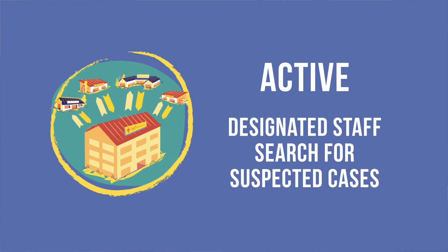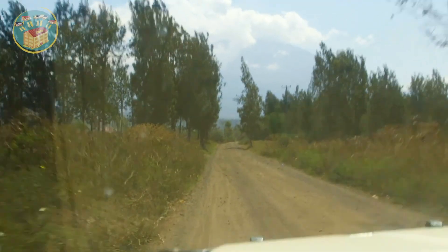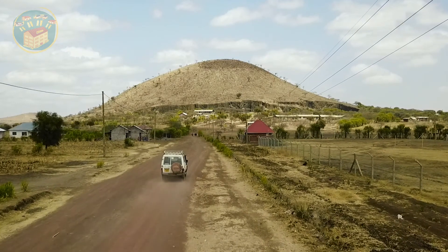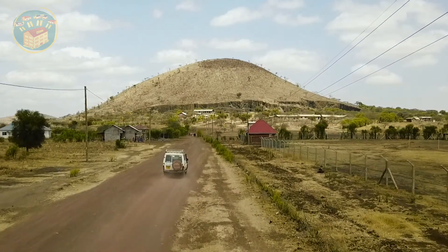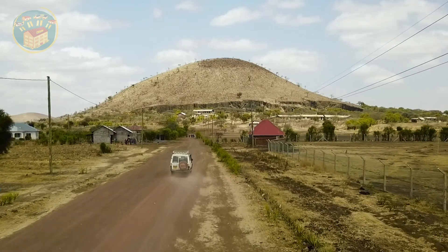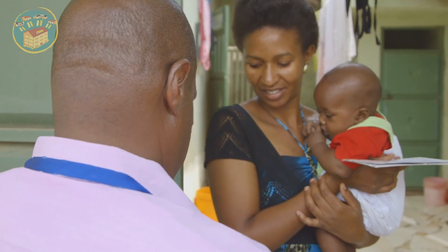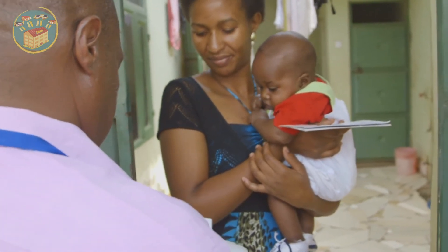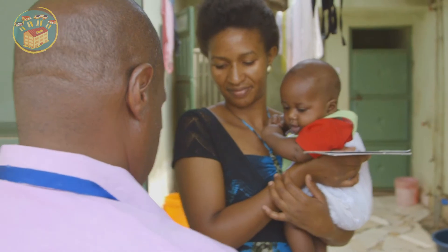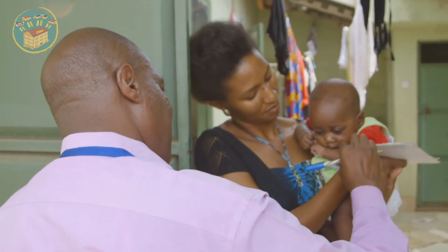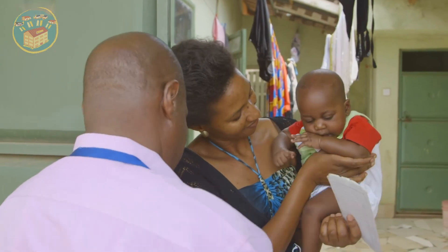With active surveillance, designated surveillance staff search for additional suspected cases of a disease in communities that are at risk. The surveillance staff will visit health facilities, including hospitals, to talk with health care providers, review medical records, and review registers for both out- and inpatient registers. Active surveillance is used to detect outbreaks and unreported cases. It is particularly useful when your surveillance objective is to eradicate or eliminate a disease, since every possible case must be found and investigated.